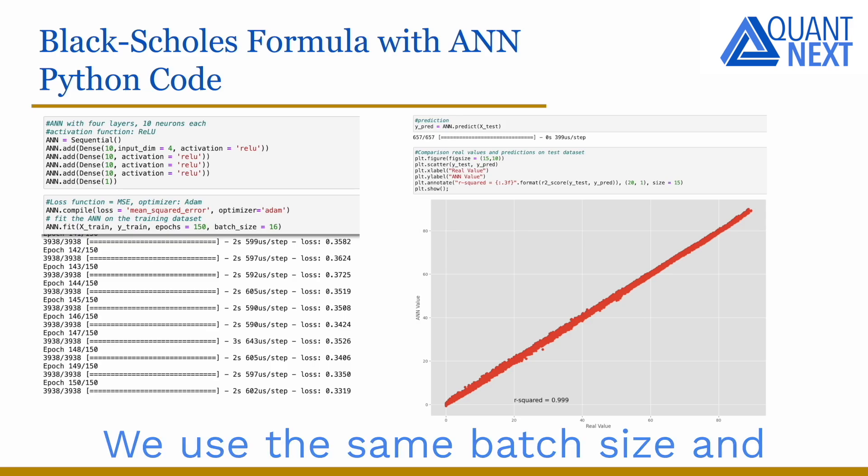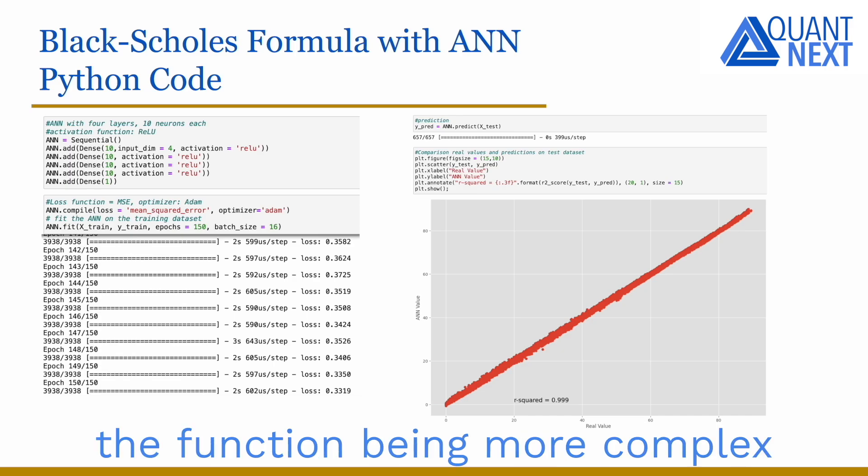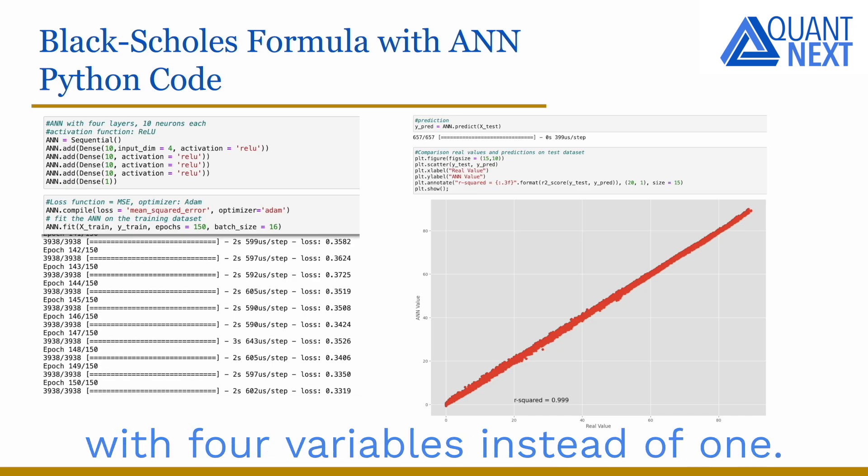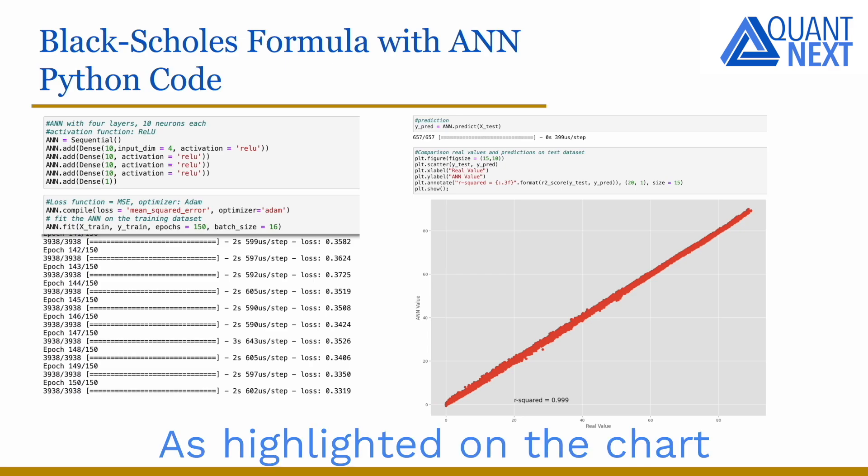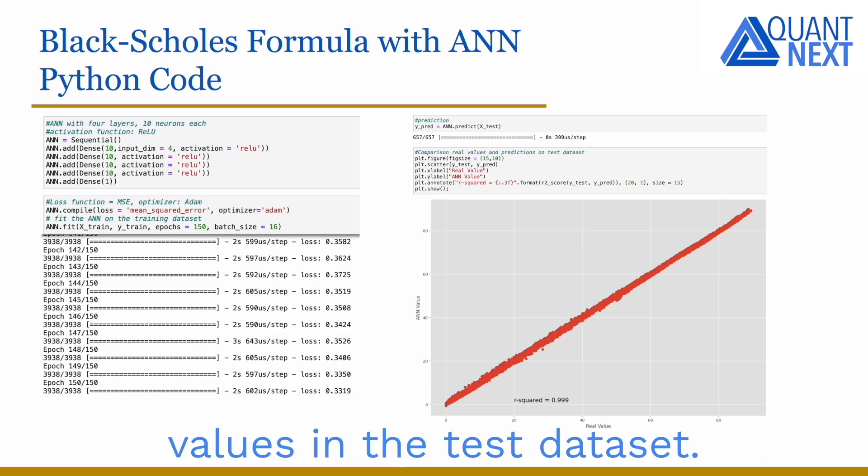We use the same batch size and number of epochs as in the previous example. Of course, the training takes more time compared to the previous simple example as the training dataset is bigger, the function being more complex with 4 variables instead of 1. As highlighted on the chart on the right, we still get good results when comparing estimated and real values in the test dataset.